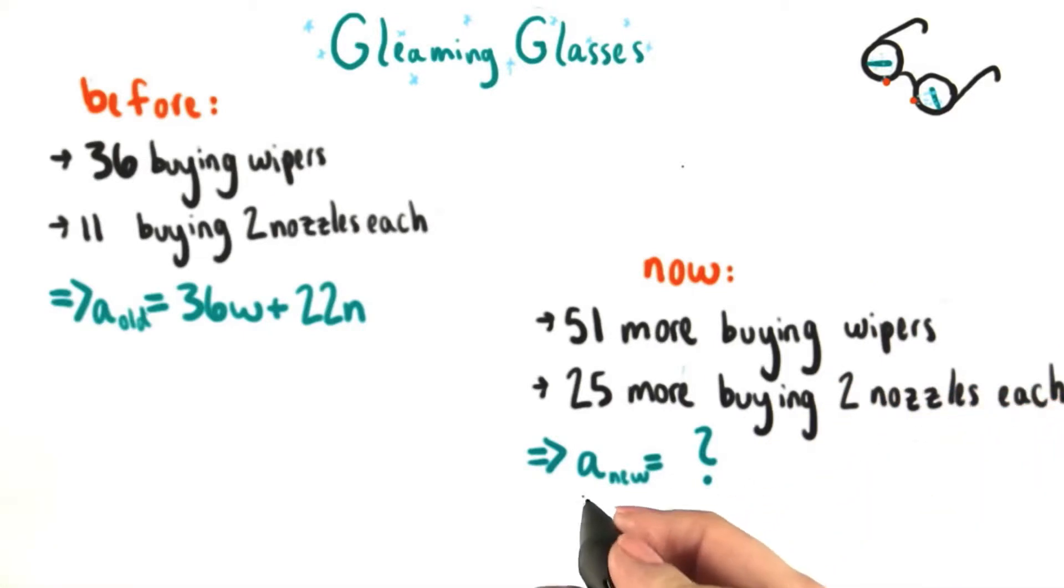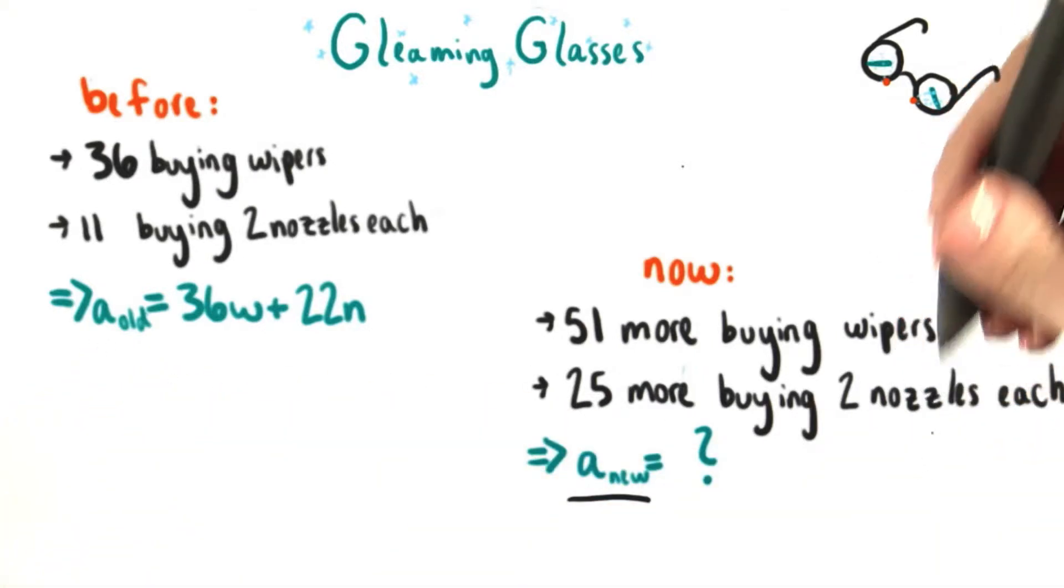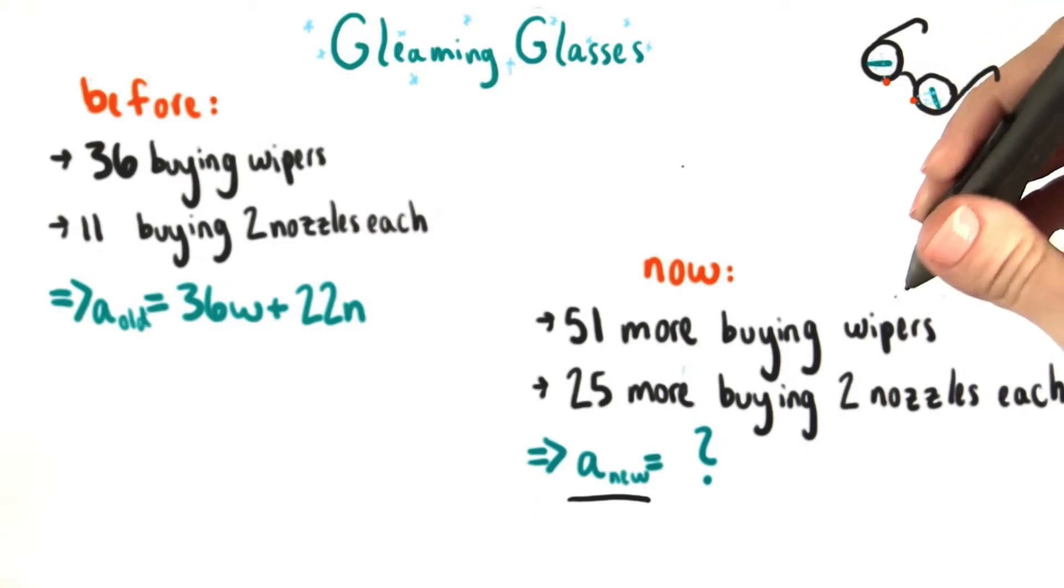What we're going to do in this quiz is come up with an equation for A new, which should combine the information from A old with this new data about people who are also going to buy the wipers and nozzles.